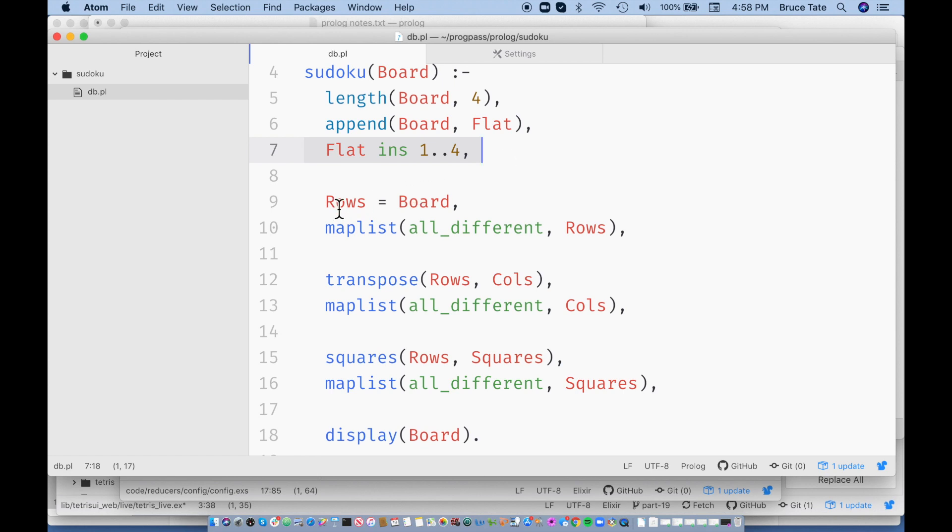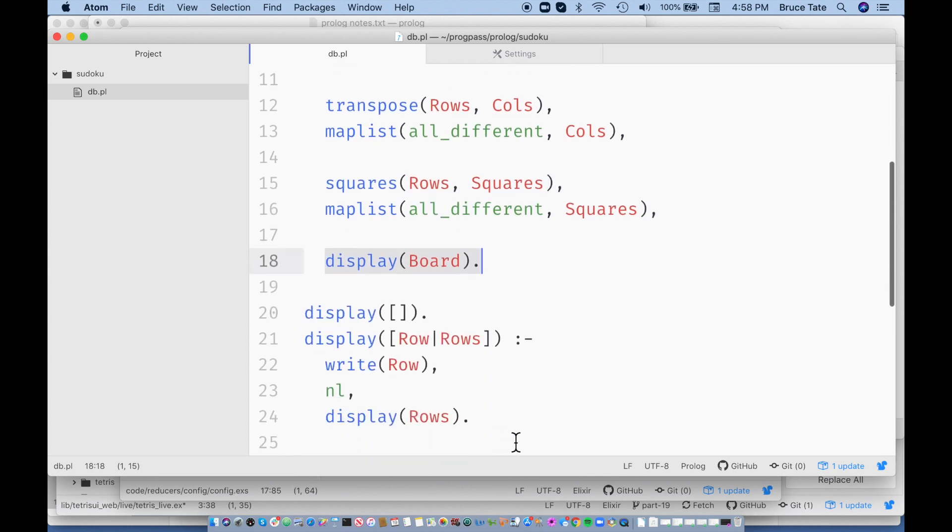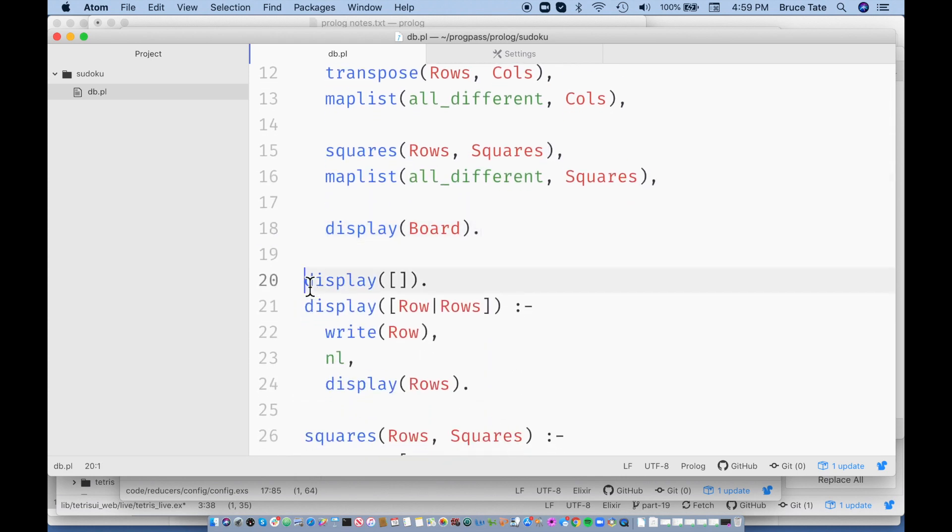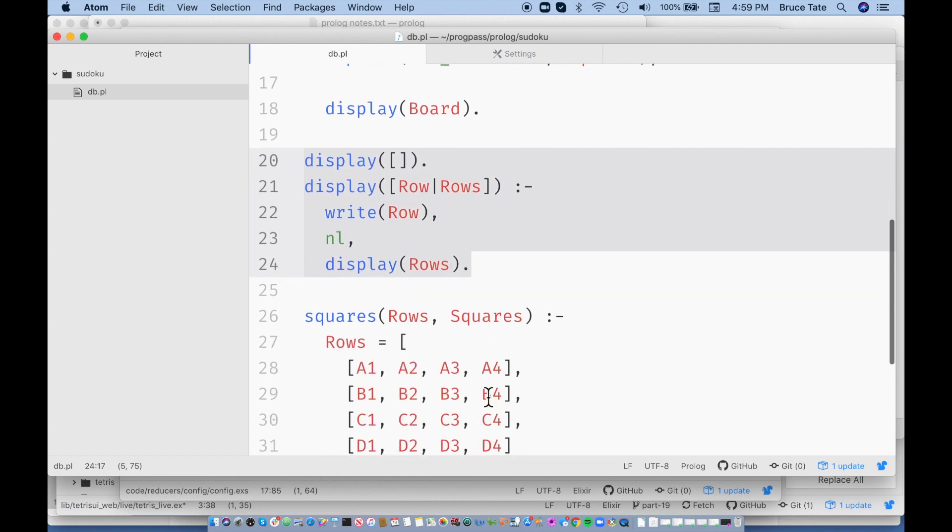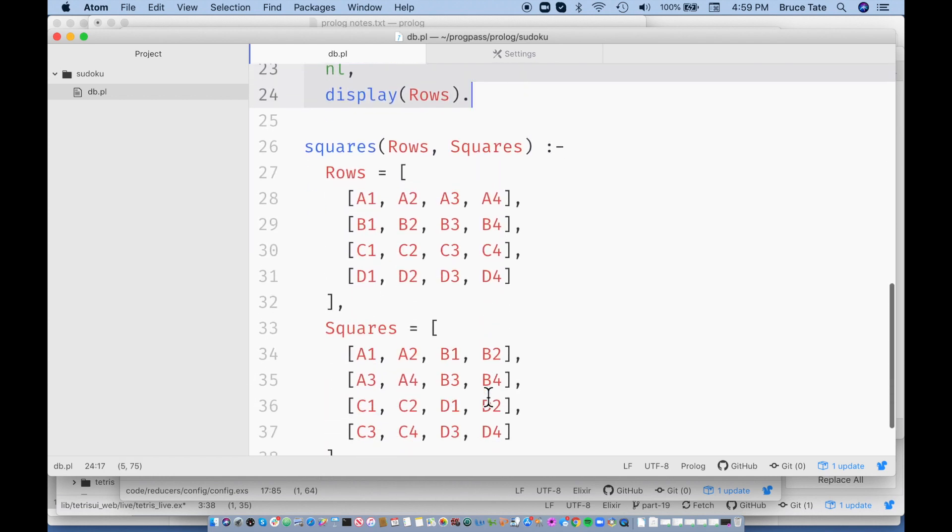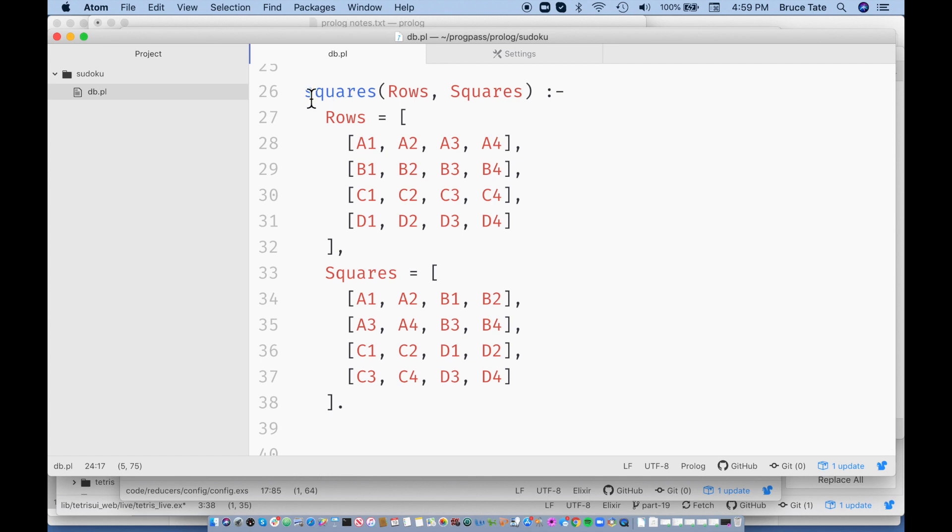And then all of the rows are different, all of the columns are different, and all the squares are different, which is a wonderful solution to the problem. And everything else is displaying the board, which looks like this, and specifying what a square is. We specify the squares exactly like this. And that's it.